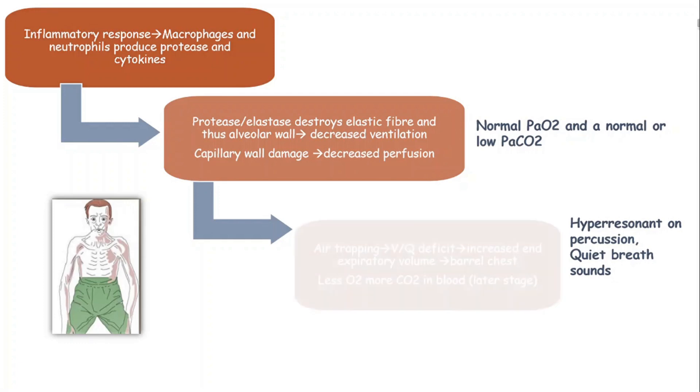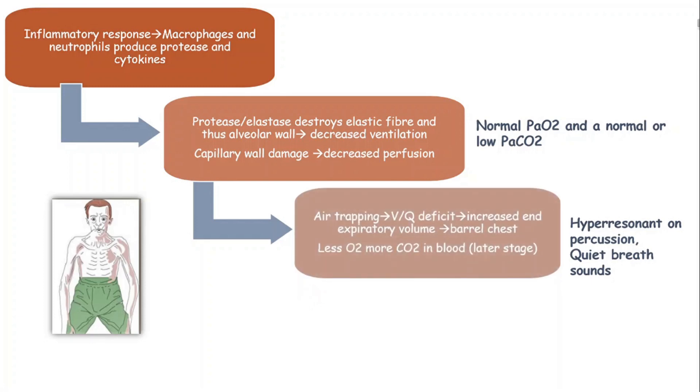In addition to these, there is air trapping because the elasticity of the alveolus is lost. There is ventilation and perfusion deficit because of air trapping, and the amount of air in the alveolus at the end of respiration results in increased end expiratory volume. That is what we witness as barrel chest in these patients. It is hyper-resonant on percussion over the chest fields and breath sounds are quiet.